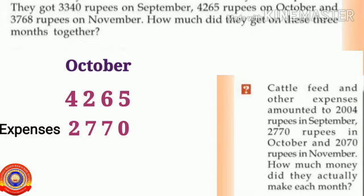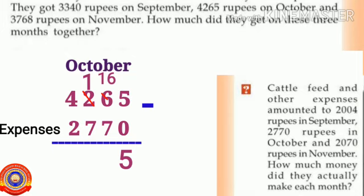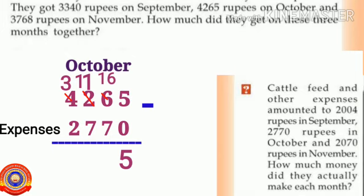The amount they made in September was 1336 rupees. For October: 4265 minus 2770. 5 minus 0 is 5. Subtraction of 7 from 6 is not possible, so borrow 1 from 2 — 6 becomes 16 and 2 becomes 1. Subtraction of 7 from 1 is not possible, so borrow 1 from 4 — 1 becomes 11 and 4 becomes 3. Then: 16 minus 7 is 9, 11 minus 7 is 4, 3 minus 2 is 1. The amount they made in October is 1495 rupees.